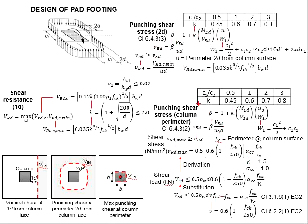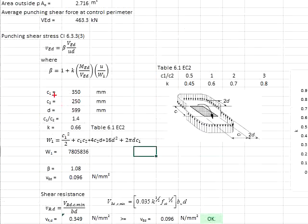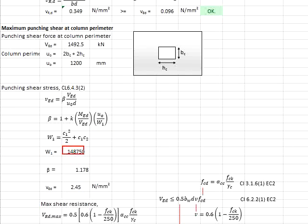Now, you need to determine the beta. Since there is a moment acting on the pad footing, the beta will be greater than 1.0. The MED here is equal to 50 as given. VED is the one that you calculated earlier, and the perimeter of the column also. You need to compute W1, which is determined by this formula, where C1 and C2 are the values you have already determined earlier in accordance to this figure.